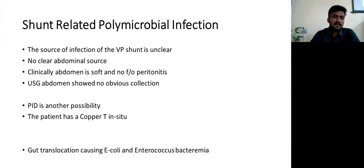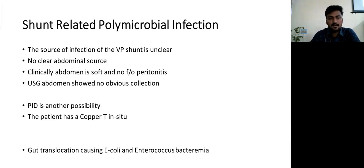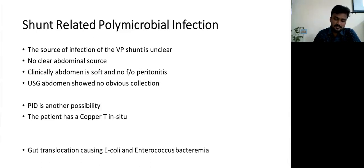The source of infection for the VP shunt was unclear. There was no clear abdominal source — clinically the abdomen was soft with no features of peritonitis, no guarding, no rigidity, and USG abdomen showed no obvious collection. PID was considered as another possibility for this Gram-negative septicemia and CNS infection, since the patient had a copper T in situ — whether that caused PID with probable gut translocation causing E. coli and Enterococcus bacteremia.